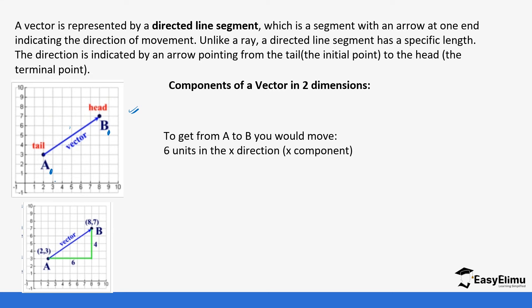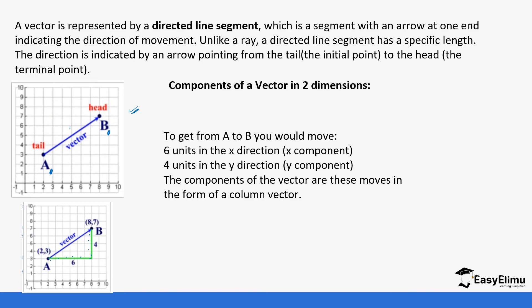When indicating vectors, we have two components. For example, to get from A to B, first we move six units along the x-axis — one, two, three, four, five, six — and then we move four units in the y-direction — up one, two, three, four. So when writing column vectors, it has two components: the x-axis component and the y-axis component, with x coming before y. In this case, x is six and y is four, forming our column vector.